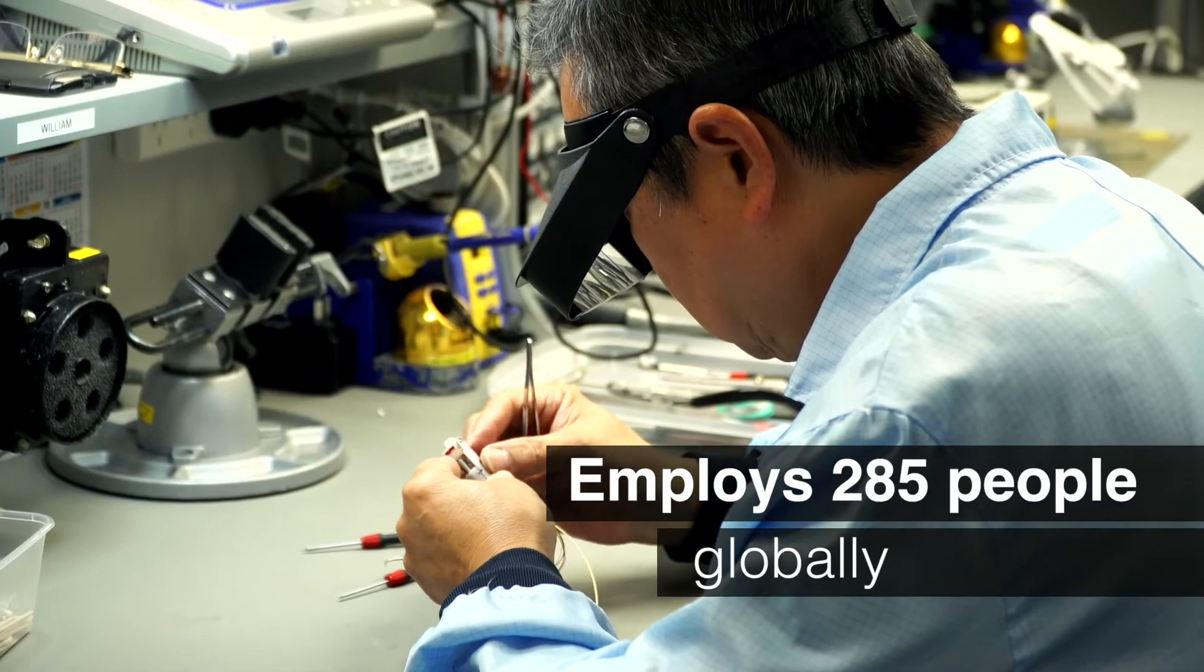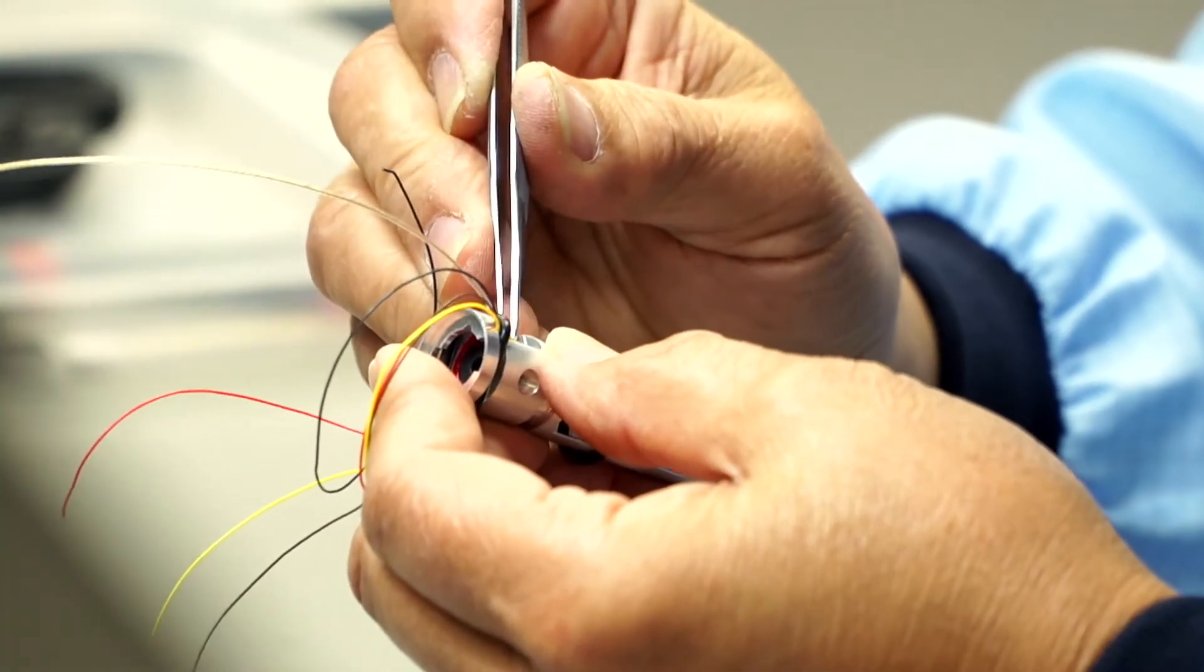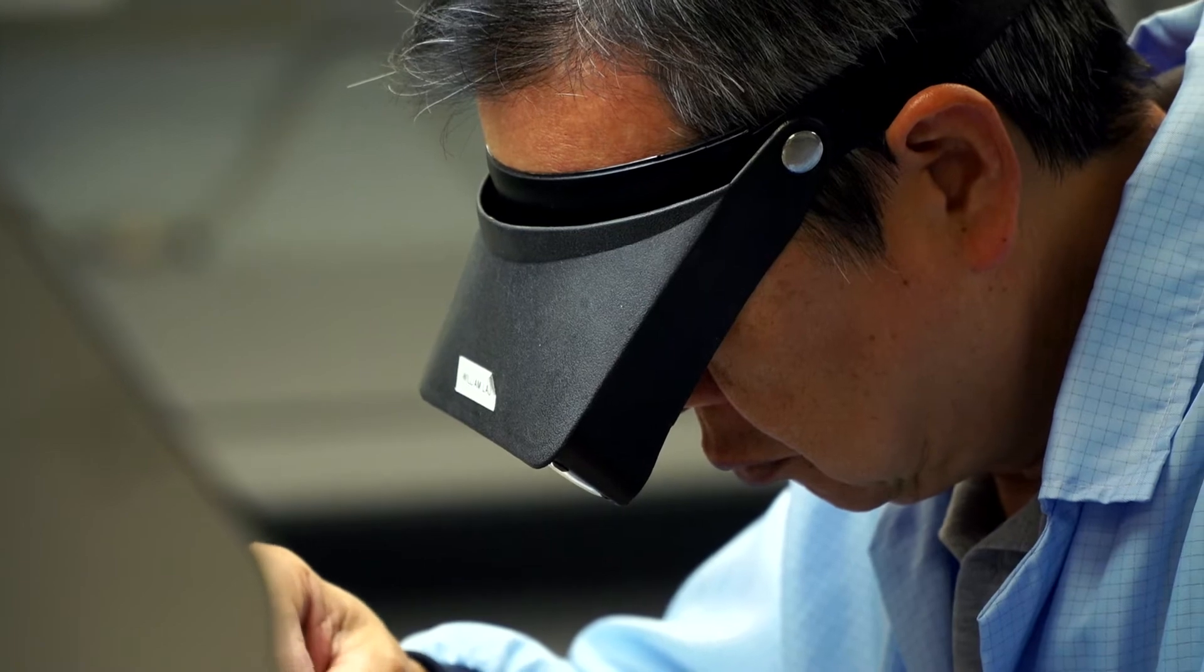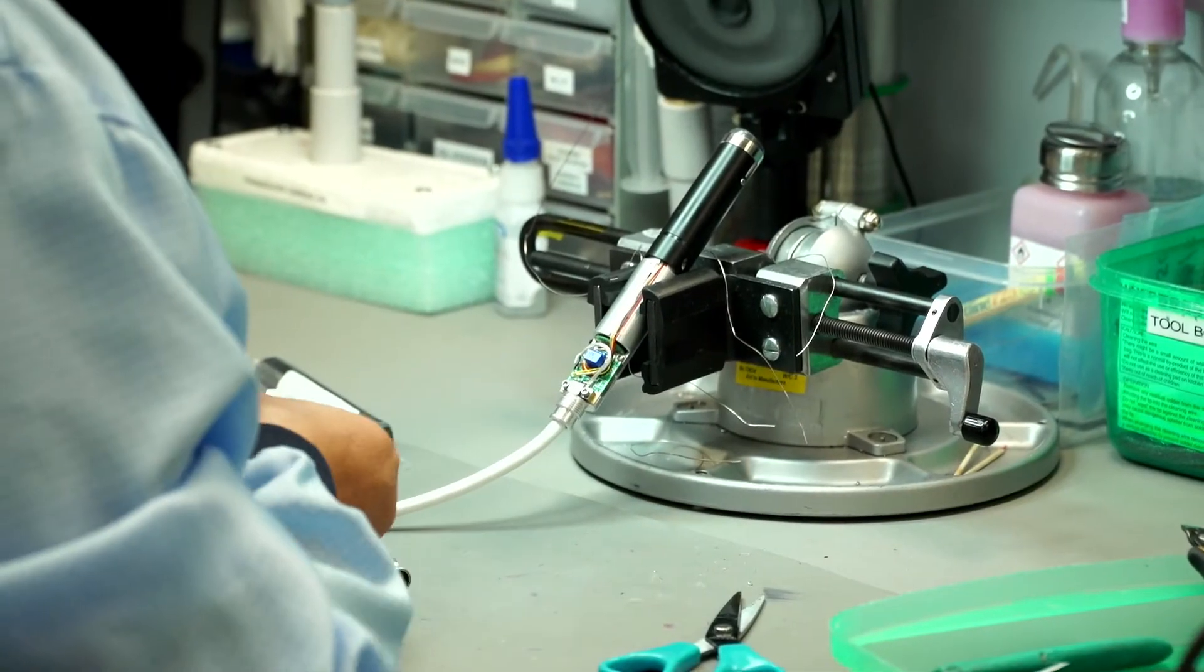Ellex has about 285 people globally because we have offices overseas in Europe, the US, and Japan as well. Here in Australia we have over 160 people employed.